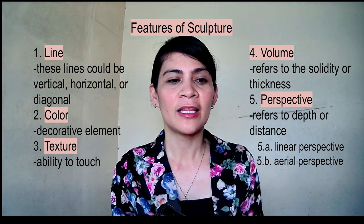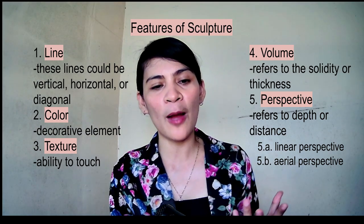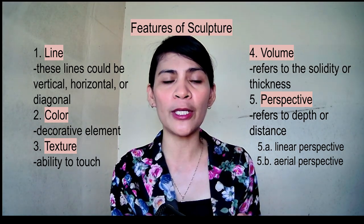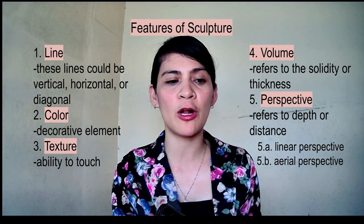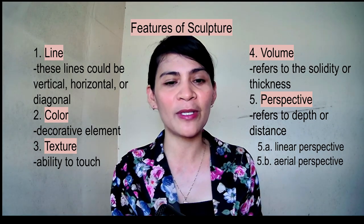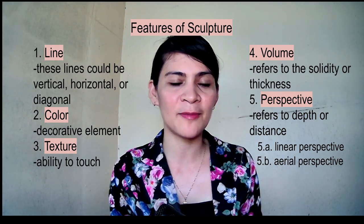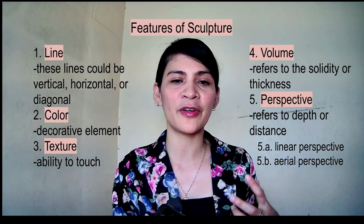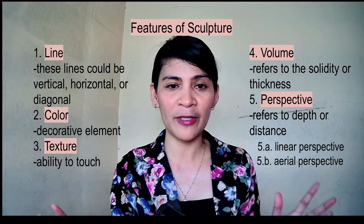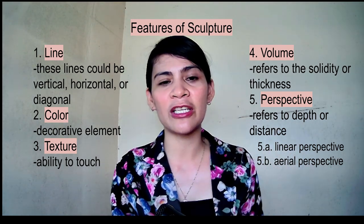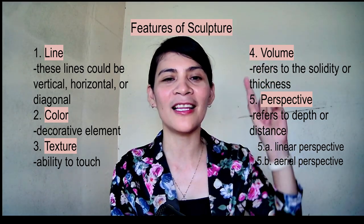We also have volume, which means solidity or thickness. Volume in sculpture is very important because a sculpture occupies space. We also have perspective, which refers to depth or distance. There are different perspectives — the two main features of perspective are linear and aerial perspective.